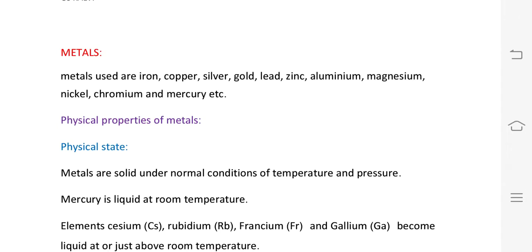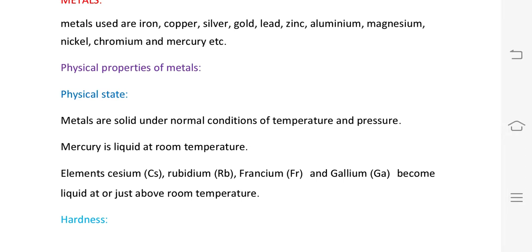Physical properties of metals — first, physical state. Metals at normal temperature and pressure exist as solids. Exception: mercury is liquid at room temperature. Elements like cesium, rubidium, francium, and gallium become liquid just above room temperature.